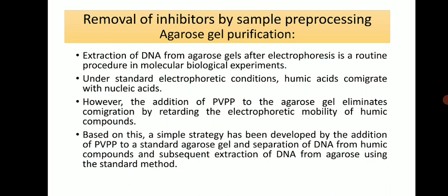Removal of inhibitors by agarogel purification: extraction of DNA from agarogels after electrophoresis is a routine molecular biology procedure. Under standard electrophoretic conditions, humic acid migrates with nucleic acids. However, migration of humic acid is inhibited by adding PVPP to the agarogel, which eliminates co-migration by retarding humic acid movement so only DNA moves in the electrostatic field. A simple strategy involves adding PVPP to standard agarogel, separating DNA from humic compounds, and extracting it using standard methods.